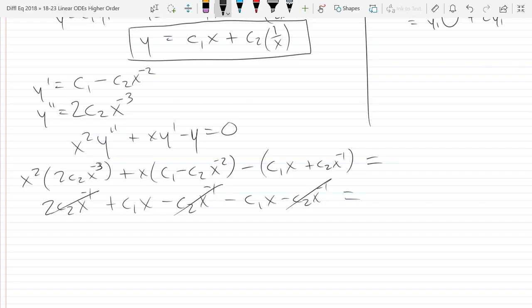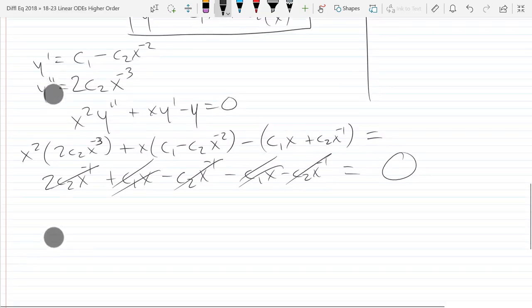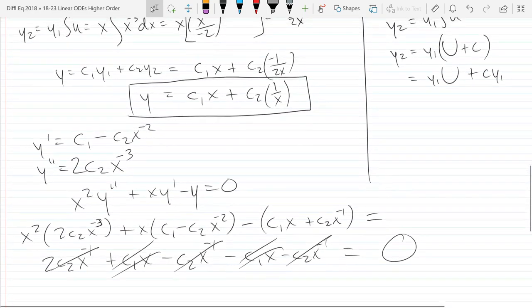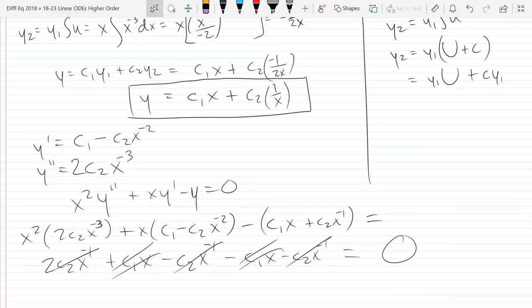2 C2 x negative 1, plus C1 x minus C2 x negative 1, minus C1 x minus C2 x negative 1. I have two C2 x negative 1's and minus C2 x negative 1, minus C2 x negative 1. Those three terms cancel out, and we got C1 x minus C1 x. There we go, no problem. That worked out.